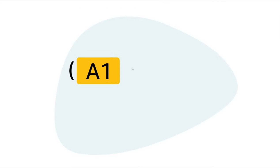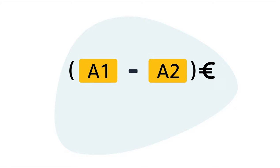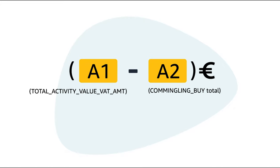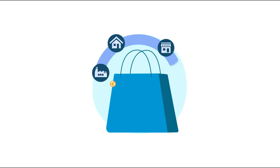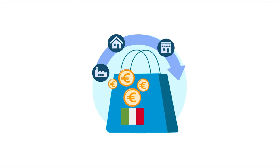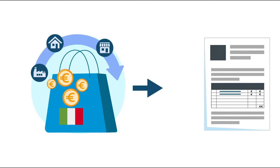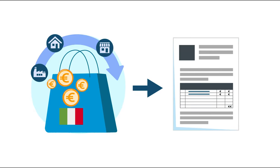Step 9: Deduct the commingling buy total amount computed in Step 8 from the previous sum you computed in Step 7. For example, let's assume the total amount of your VAT liability for Italy in the Amazon Transaction Report is €150. Record this amount — you will need it later to compute your total VAT liability.